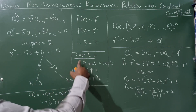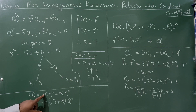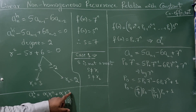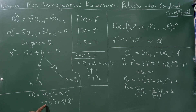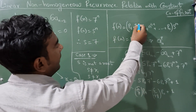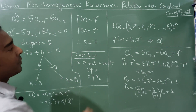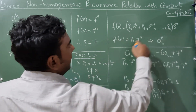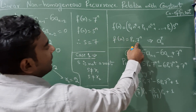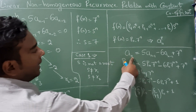Since s is not a root of the characteristic equation, we use Case 1. For the homogeneous recurrence relation, the formula gives: α1·3^n + α2·2^n. From Theorem 6, f(n) has the form p0·s^n, so the particular solution takes the form a(n)_particular = p0·7^n.